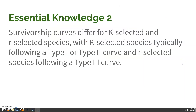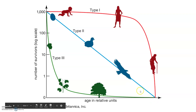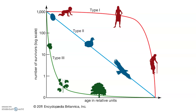As we discussed in class, we see a trend with survivorship and R/K selection. The K-selected species are your type 1 curve. The R-selected species are your type 3 curve. Type 2 is kind of somewhere in the middle — K-R-ish. And this connects to the reason why they produce the amount of offspring that they do.